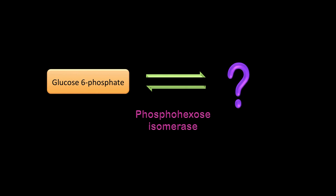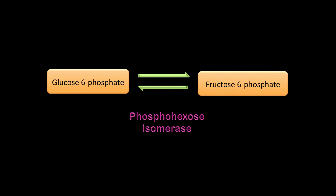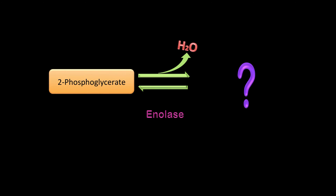Glucose-6-phosphate: your enzyme is phosphohexose isomerase, your product is fructose-6-phosphate. You're converting an aldo sugar to a keto sugar — that's why you're using an isomerase enzyme.